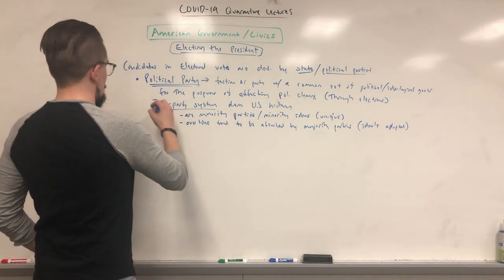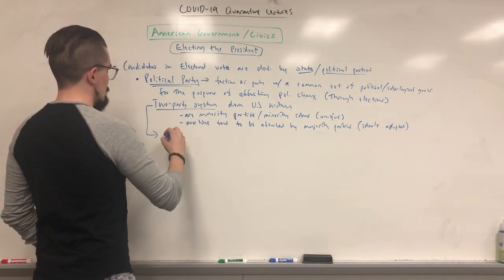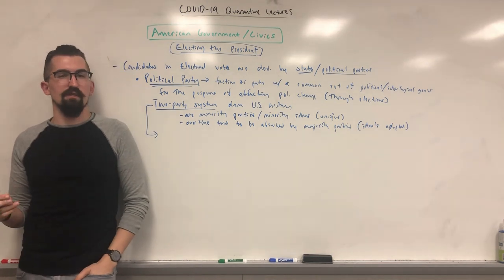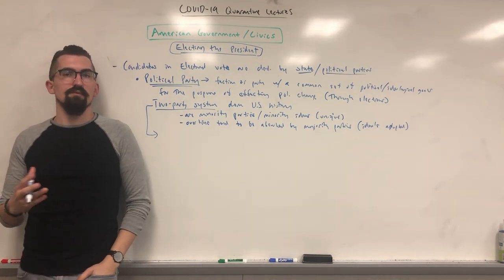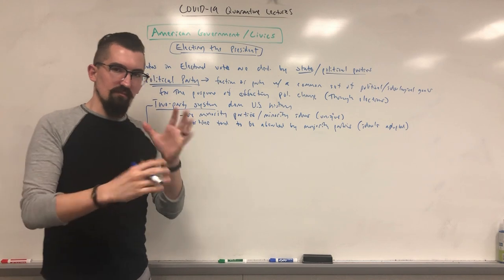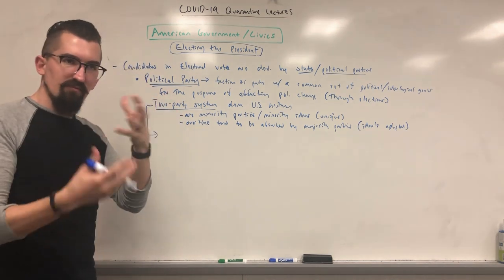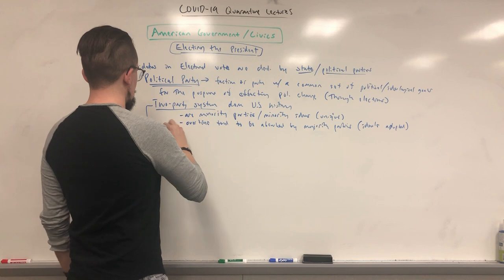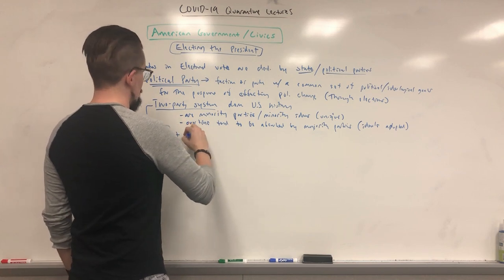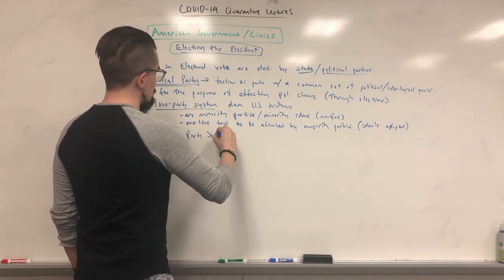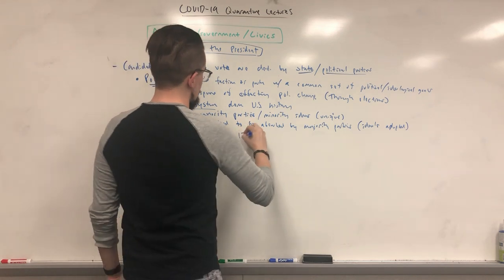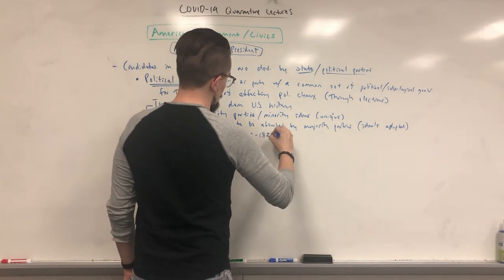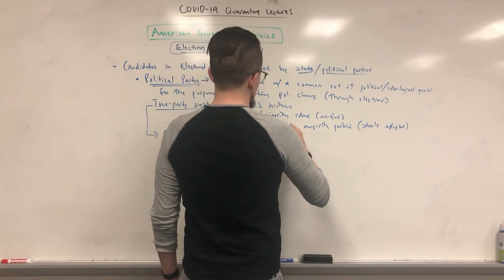This system has been alive and well for a long time. We have a series of five party systems — some argue six or seven — but we'll keep it at five. There have traditionally been five or so two-party systems in the United States. The first party system ran from roughly 1792 to 1824.